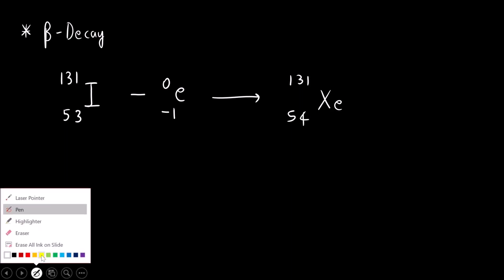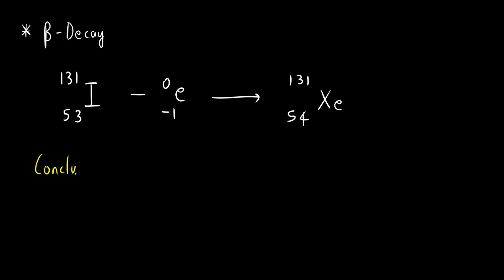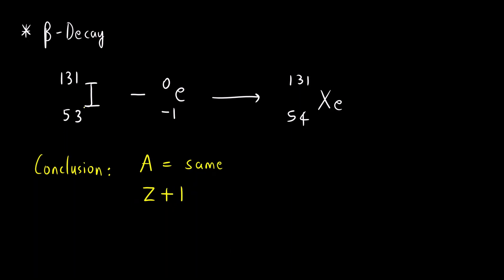The conclusion for beta decay: the atomic mass number remains the same, but the atomic number increases by 1 unit — Z becomes Z plus 1. If 3 beta particles are lost, the atomic number increases by 3 units.